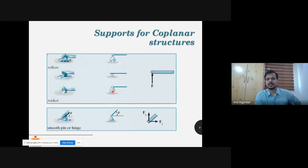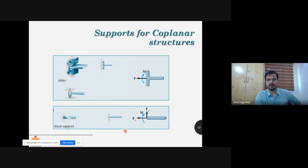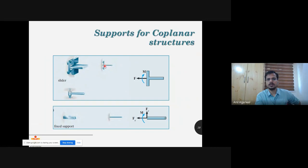These are the different ways to represent boundary conditions. A roller can be represented in various ways in a structural diagram or assignment problem. A slider allows vertical movement but not horizontal movement and not rotation. In a plane frame system, you are allowing vertical movement but not horizontal movement and not any rotation — that would be shown as a slider type boundary condition. For a fixed support, all three movements in a plane frame system are restrained.